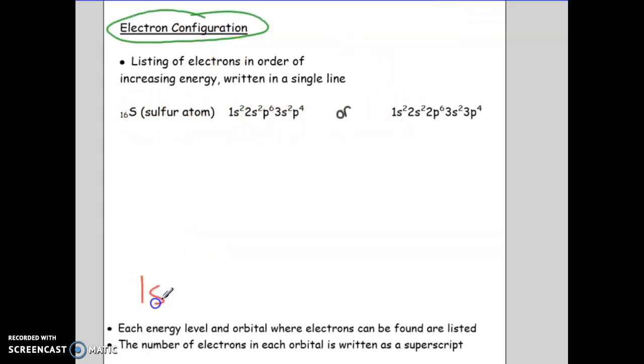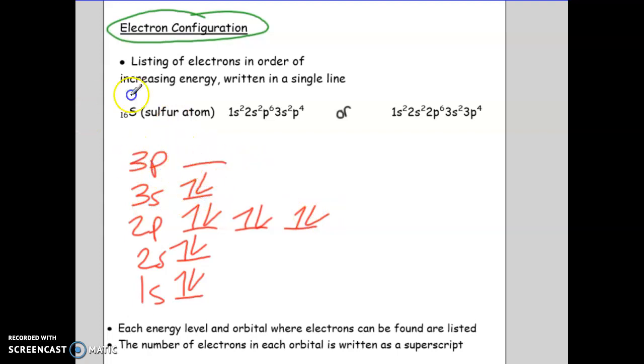Okay, so I'm going to draw the energy level diagram for sulfur and then show you what I mean how this matches up. So sulfur has 16 electrons. So we have 1, 2, 3, 4, 5, 6, 7, 8, 9, 10, 11, 12, 13, 14, 15, 16. Okay, so we have 2 electrons in 1s, 2 in 2s, 6 in 2p, 2 in 3s, and we have 4 in 3p. So notice how this is written out.